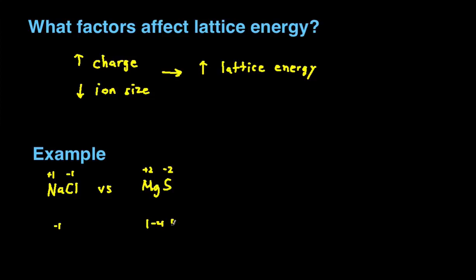You take the absolute value of these products, so this will be 1 and this will be 4. You can see that magnesium sulfide has the larger charge, so that means this is going to have the higher lattice energy.